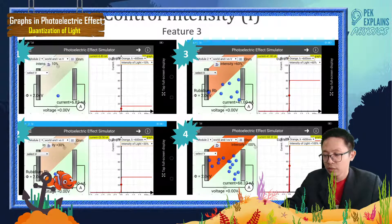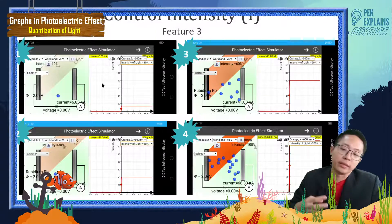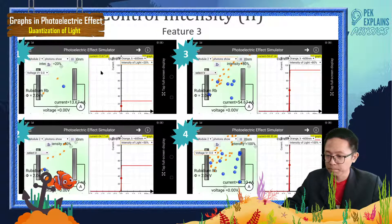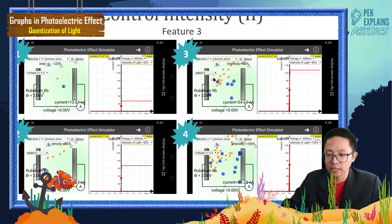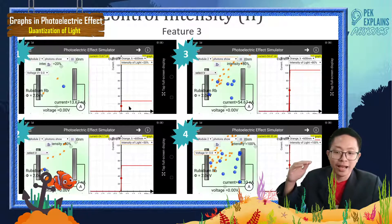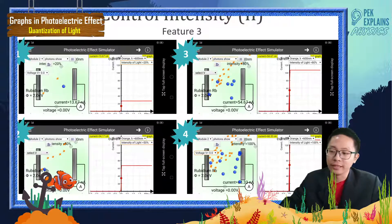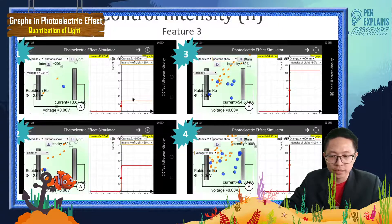Because when you have twice the intensity, the electrons ejected are also twice. So we can say the higher the intensity, the more incident photons. In another picture you can see intensities at 20%, 50%, 80%, and 100%. The higher the intensity, the more photons coming, so more electrons ejected. From low intensity up to high intensity, the saturation current increases progressively.